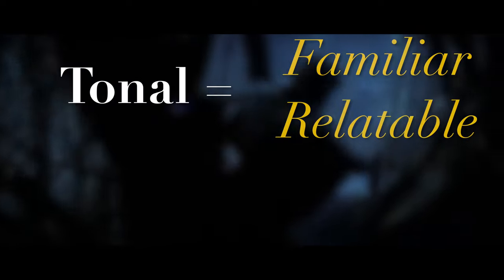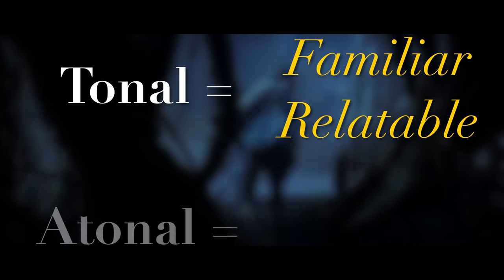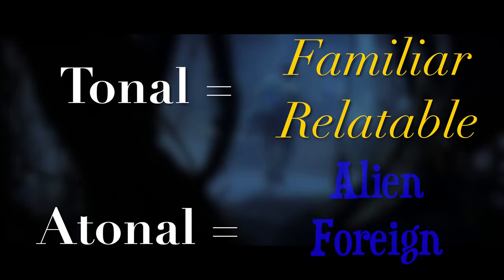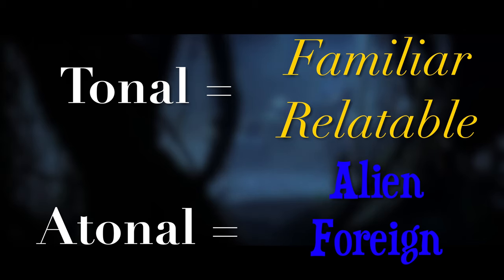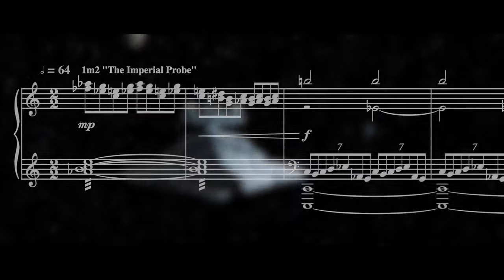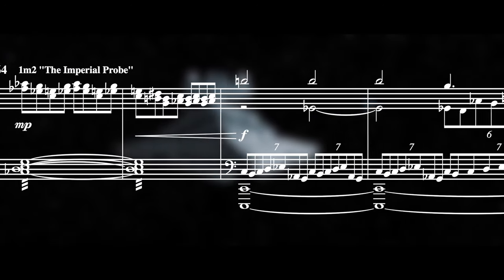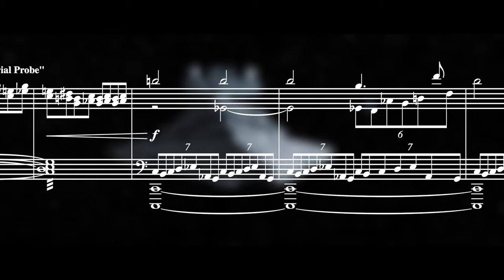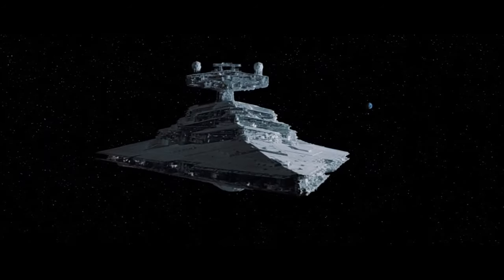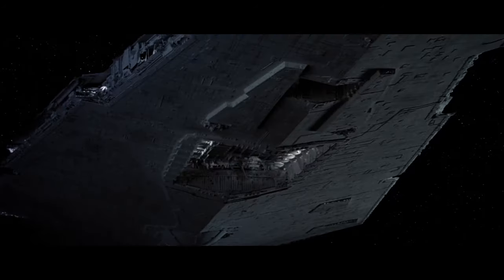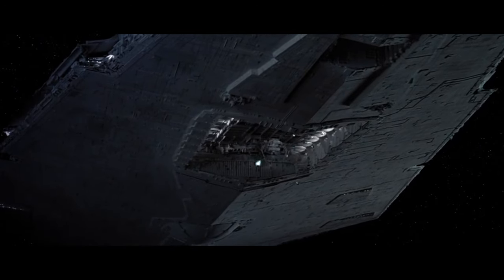In this film, one of the biggest harmonic concepts at play is how Williams uses familiar and tonal music for the relatable things in the film, and more atonal music for the foreign and unfamiliar things. You can see it from the opening scene when the music remains atonal as the camera pans down, but goes to more tonal things once we see Luke and the rest of our heroes inside the rebel base.